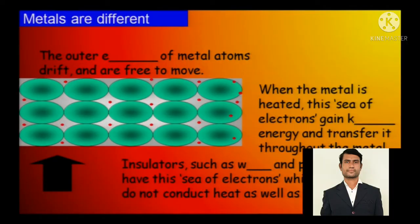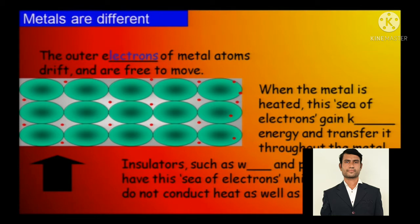The outer electrons of metal atoms drift and are free to move. The outer electrons are the most unstable electrons. If those electrons are in an electrical circuit they will carry charges, and if they are in a heat circuit they will carry heat. The outer electrons of metal atoms drift from point A to point B.